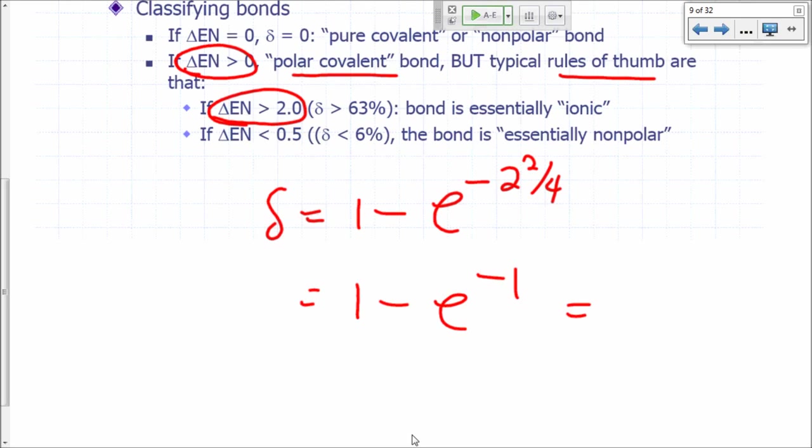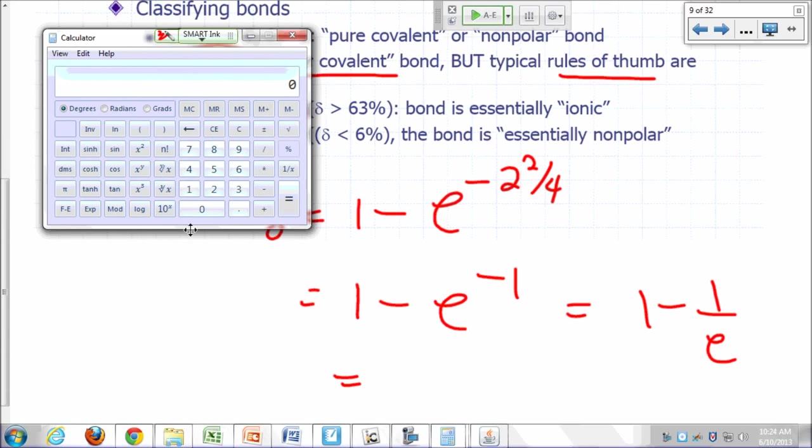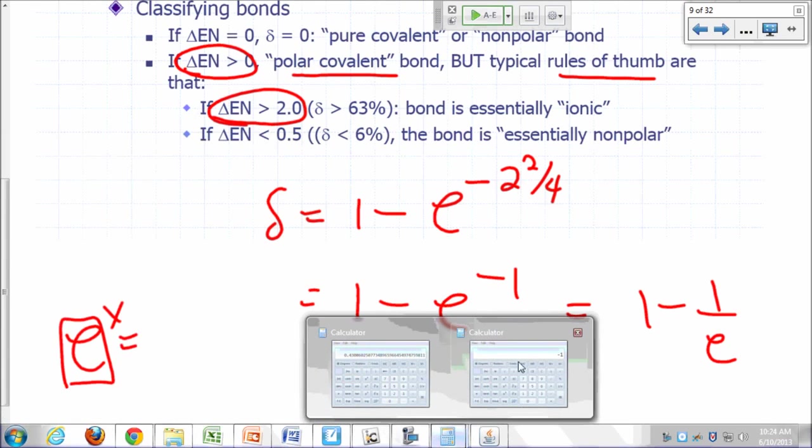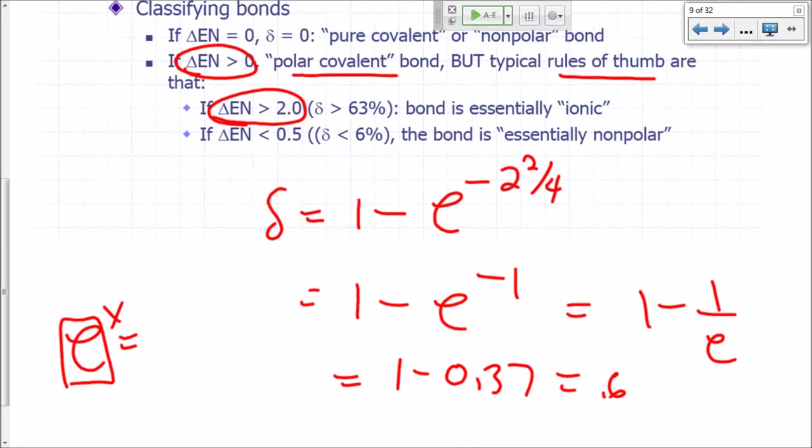1, right. So what's 1 minus e to the negative 1? That's 1 minus 1 over e. So how do I get e to the negative 1 on my calculator? I'm going to say negative 1 inverse natural log. E to the x is just the inverse of E, raising e to the power x means taking the inverse of the natural log. So I'm going to say I have negative 1 inverse, here's e to the x, right here. So it's 0.37.